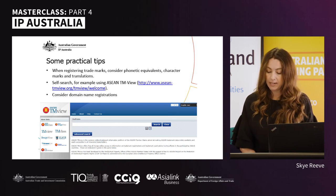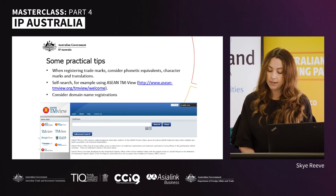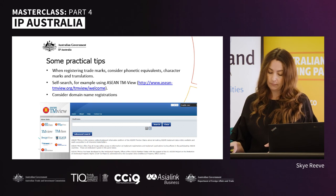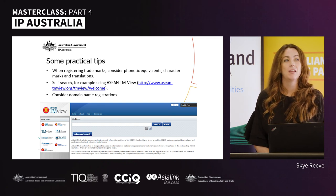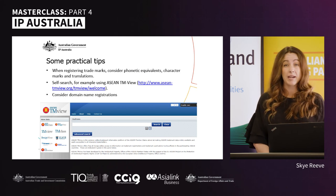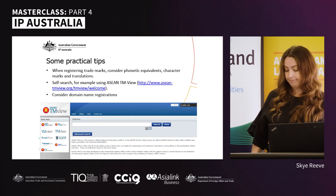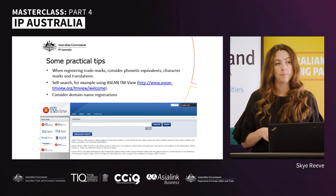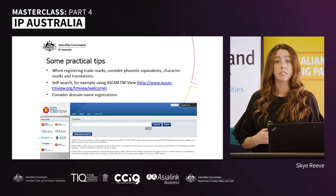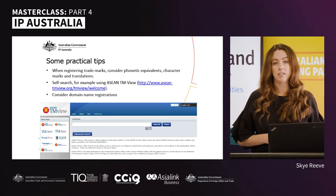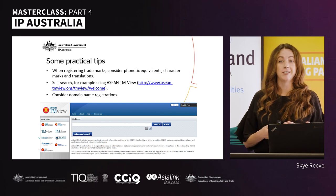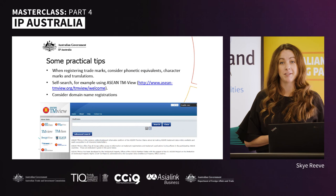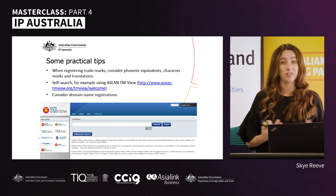WIPO also hosts useful databases including PatentScope, which allows you to search patents internationally and filter by geographical regions such as ASEAN. Consider domain name registration as well — somebody may have already registered your trademark as a domain name in the country you're seeking to trade in. We've seen time and again that someone will register the English trademark, and then somebody else has gone ahead and registered the trademark in the local language — which is very difficult to reclaim, especially in first-to-file countries.